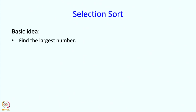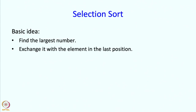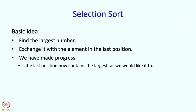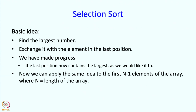The basic idea of selection sort is: find the largest number in the array, then exchange it with the element in the last position. Now we have made progress because the last position contains the largest number, which is what we wanted. Then we apply the same idea to the first n-1 elements, then to the first n-2, and so on.